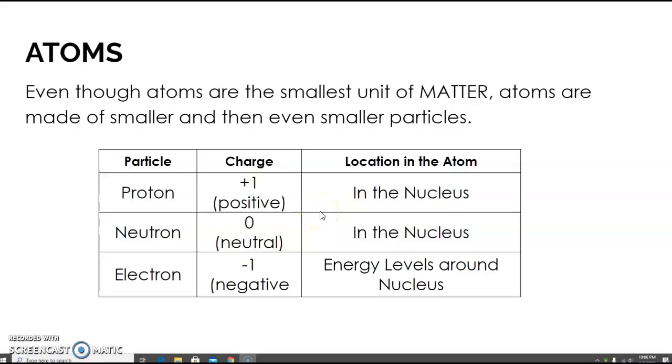We know that everything in the universe is made of atoms and that atoms are the smallest unit of matter. Atoms themselves are made up of even smaller particles called protons, neutrons, and electrons which are also made of smaller particles.